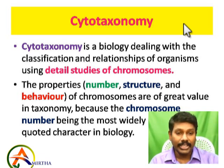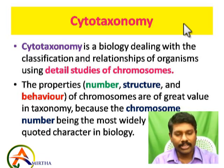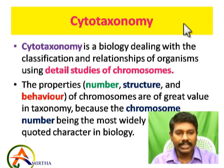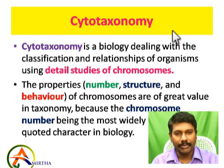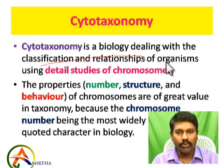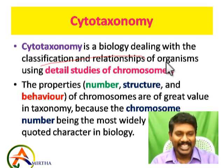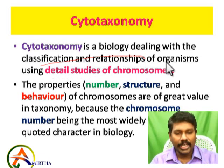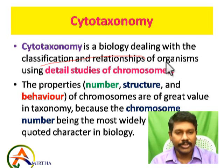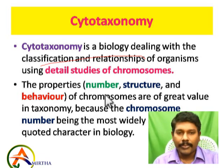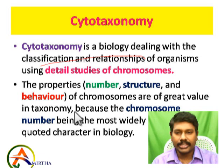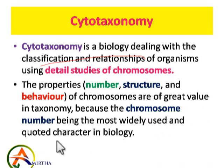Now we will talk about cytotaxonomy. Cellular components include protoplasm, which is cytoplasm plus nucleus. The main part of the cell is the nucleus, and within the nucleus are the chromosomes. Cytotaxonomy is the branch of biology that deals with classification and the relationship of organisms using a detailed study of chromosomes — their nature, number, structure, and behavior. Chromosome number is the most widely used and cited character in biology.